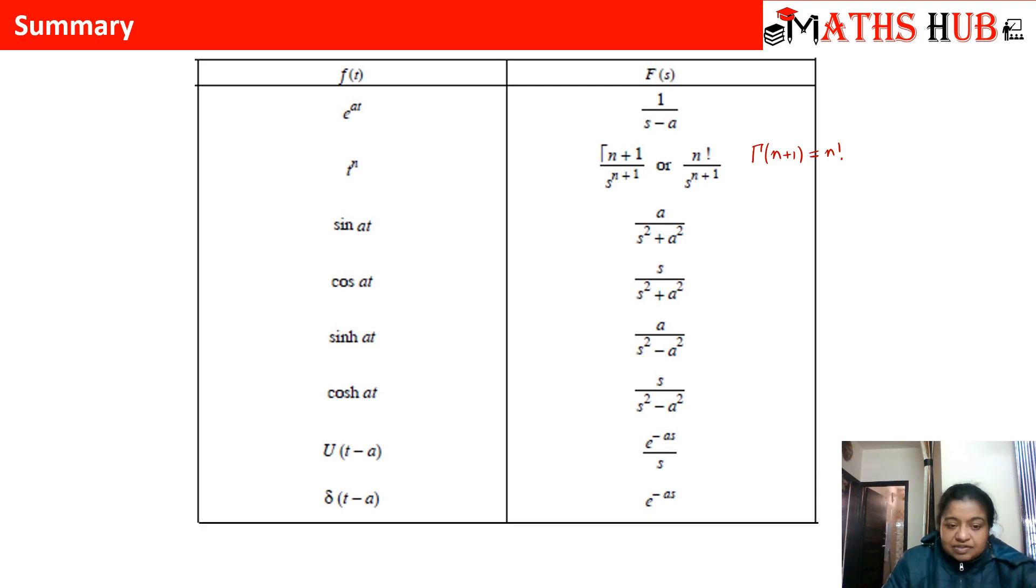Then we have similar formulas for sine hyperbolic at and cos hyperbolic at. For cos hyperbolic at, the formula is same as cos at, the only change is in the denominator instead of plus we have a negative sign. Similarly, for sine hyperbolic at it is a upon s square minus a square.